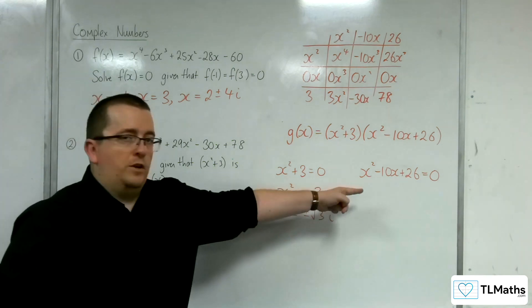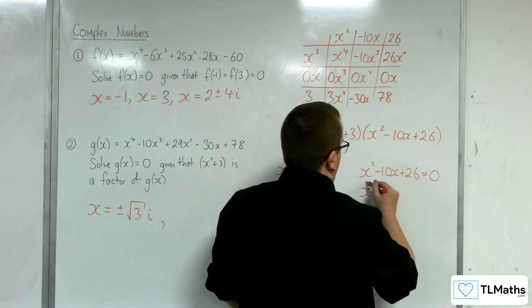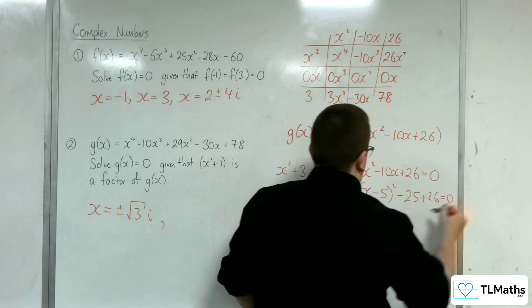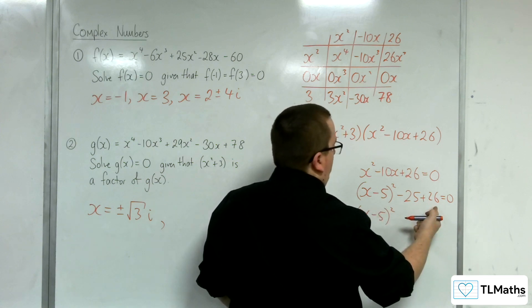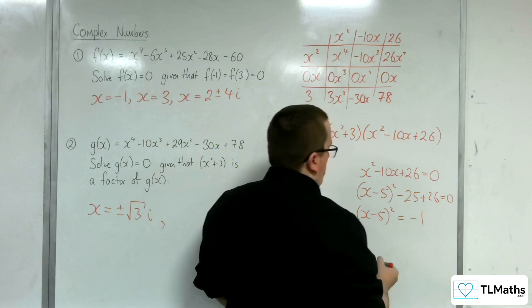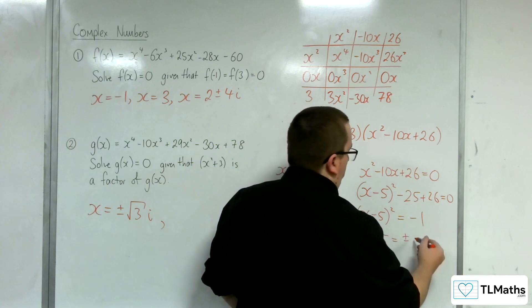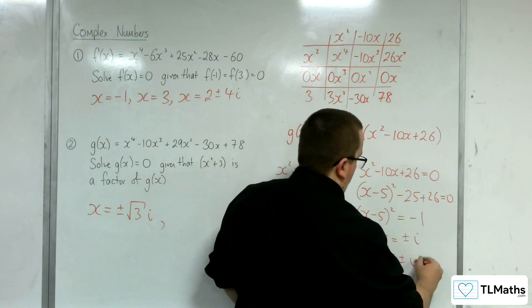So now if we have a look at the other quadratic. Complete the square. -25 + 26 is 1. So we've got -1 on the right-hand side. So (x - 5) is ± the square root of -1, so ± i. So x is 5 ± i.